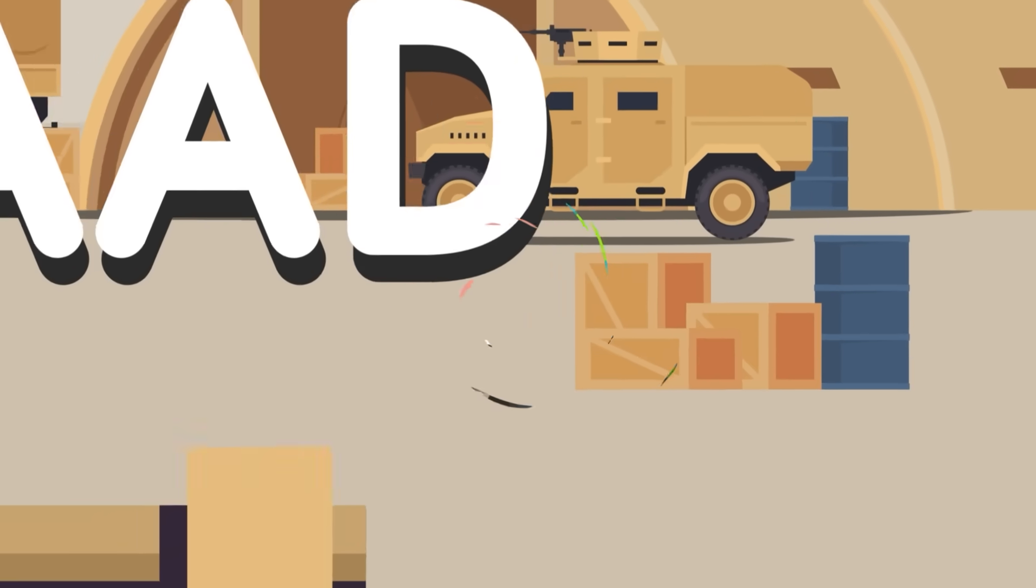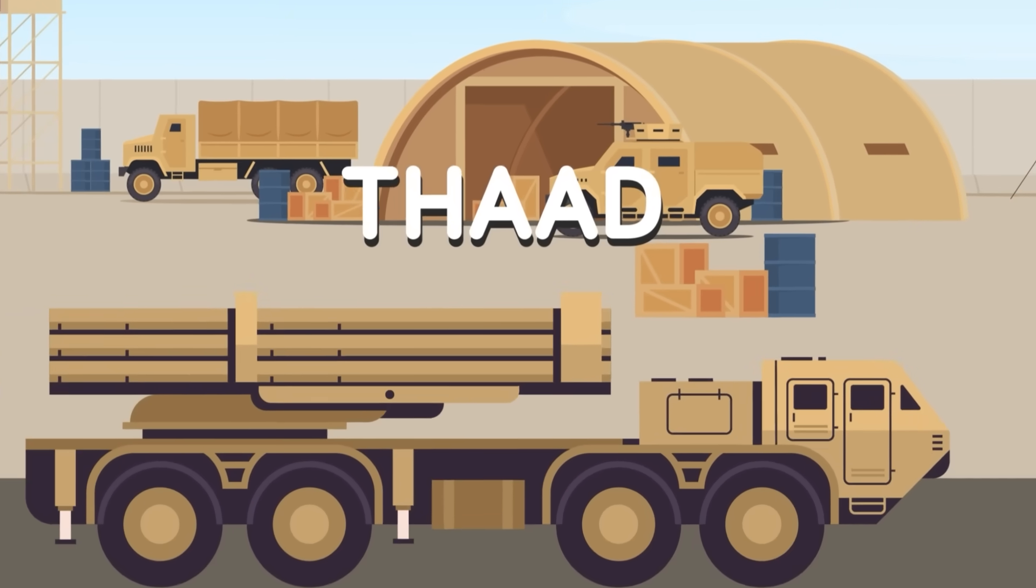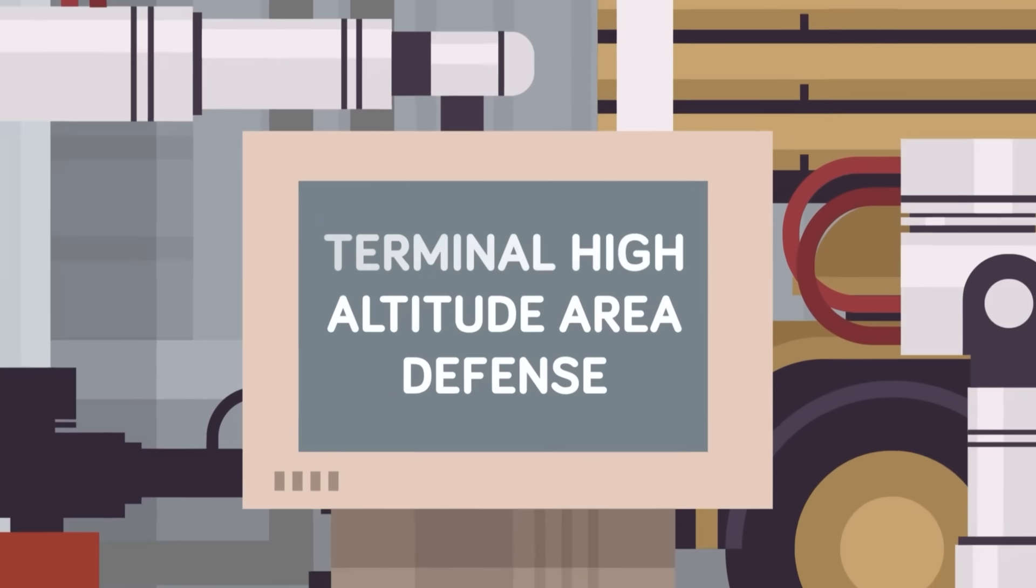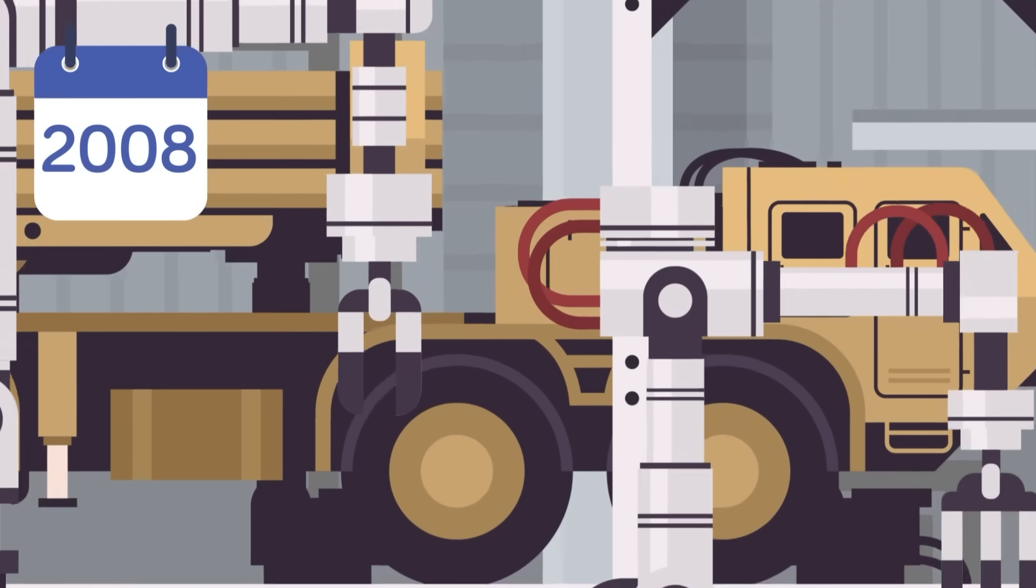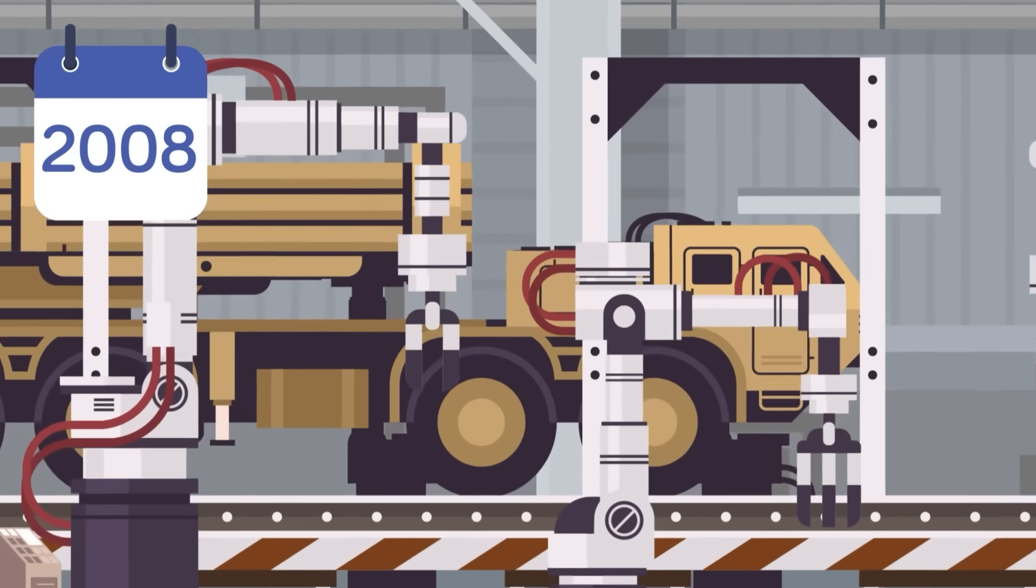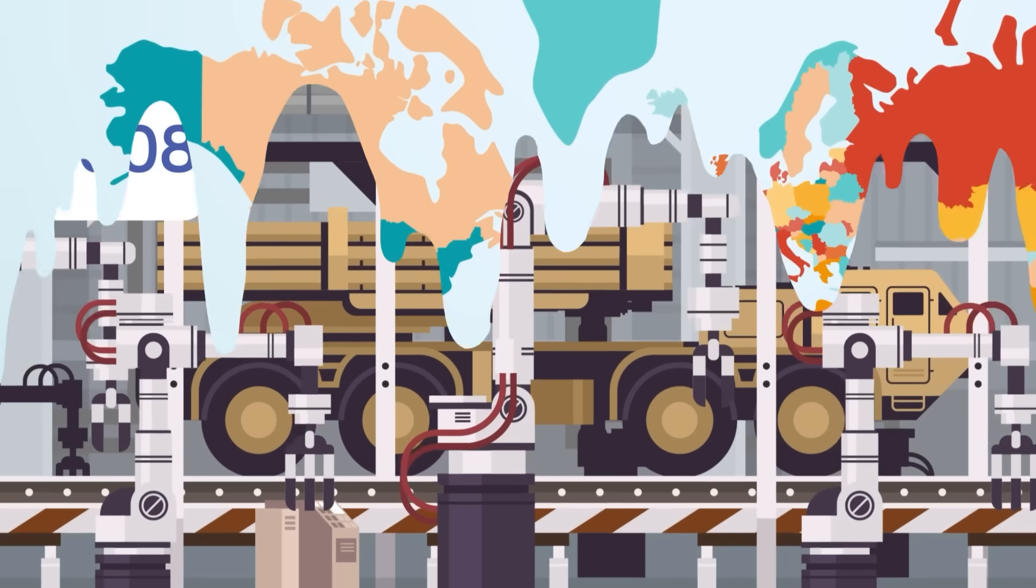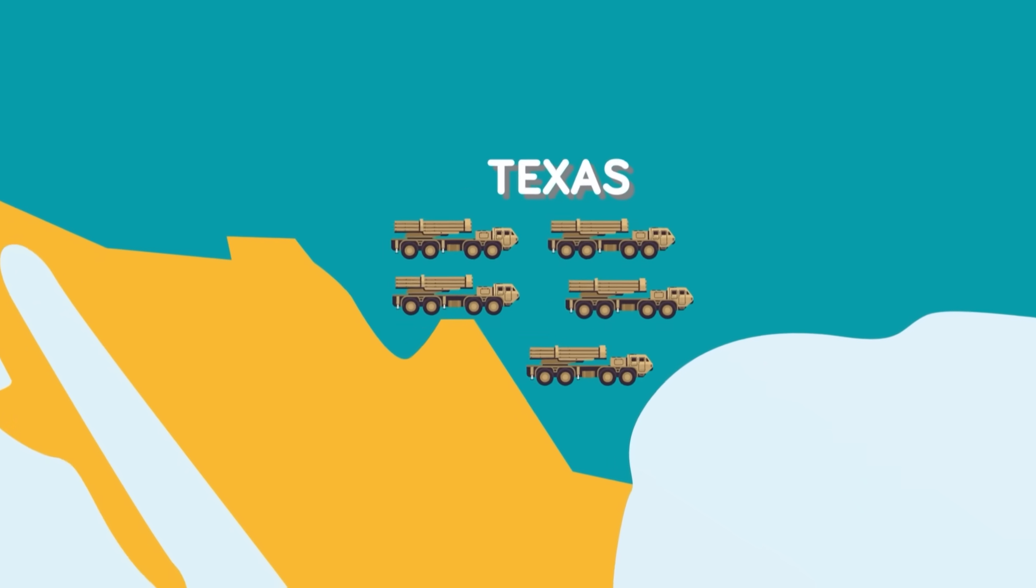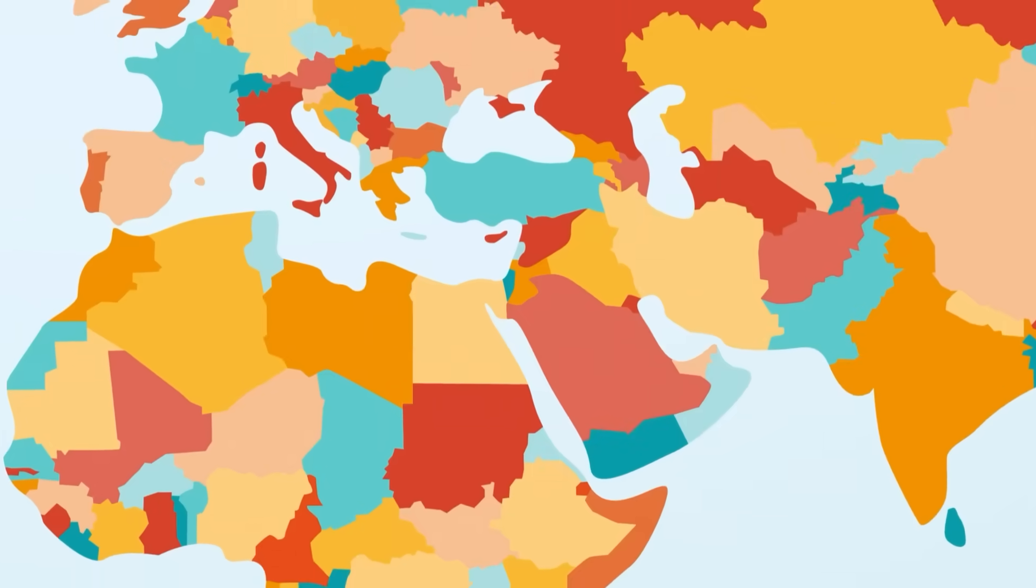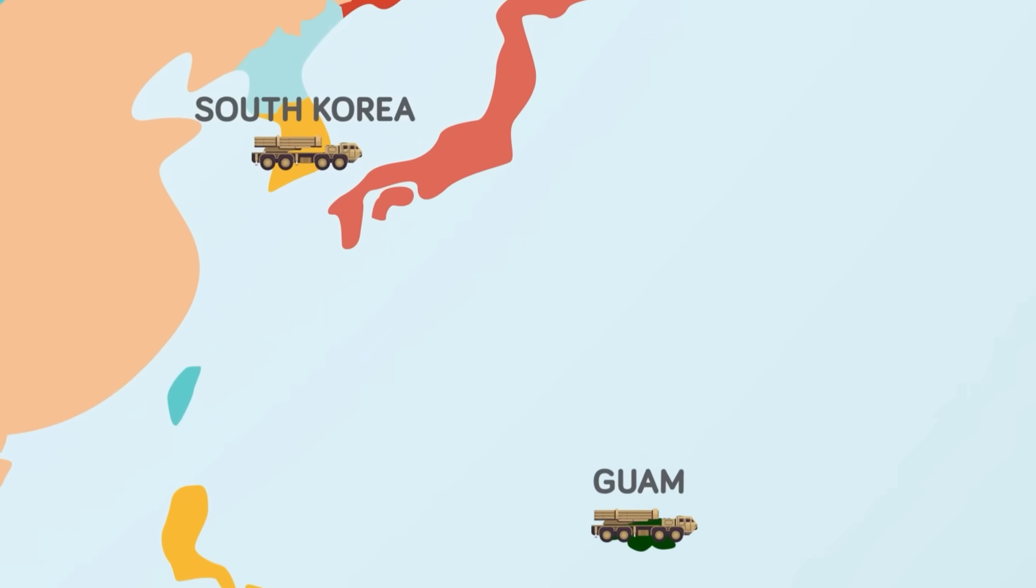The last viable homeland defense system the military can field is THAAD. Short for Terminal High Altitude Area Defense, THAAD was first developed in the mid-2000s and first reached operational capacity by 2008. Currently, there are seven THAAD batteries in the US inventory, all operated by the US Army, with five presently stationed in Texas, one in Guam, and one in South Korea.